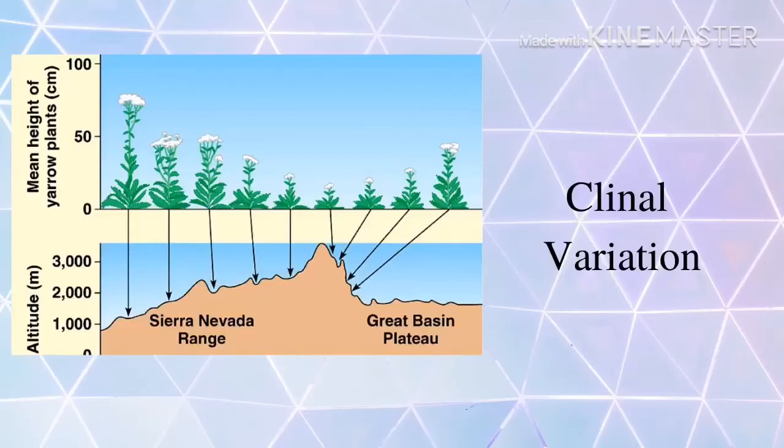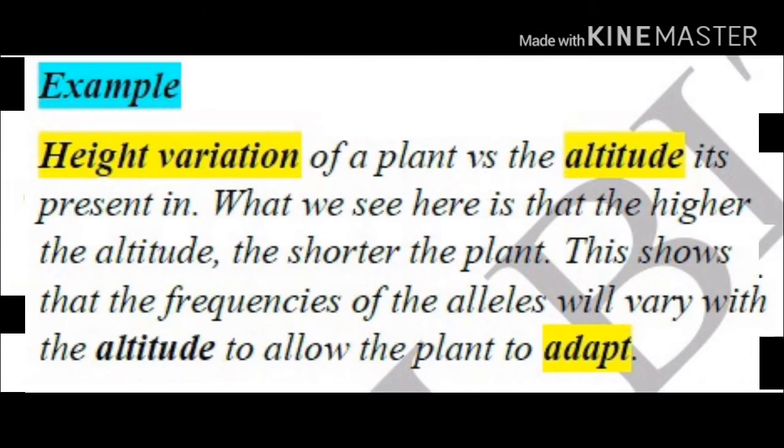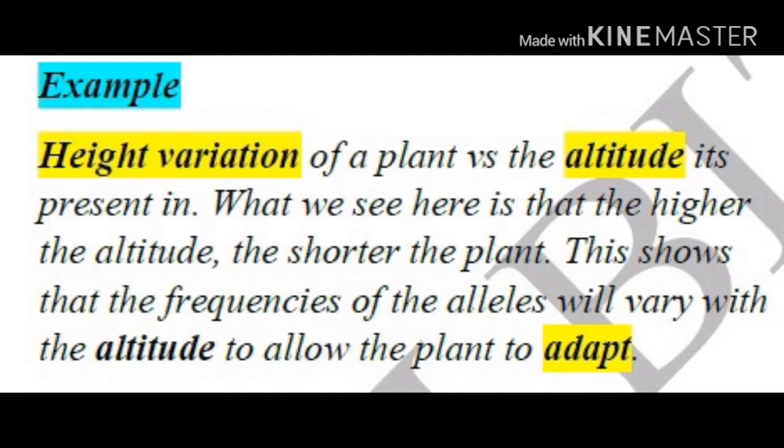During this lecture, we'll be discussing clinal variation. The traditional definition is the geographic or graded variation in a population, and we'll be explaining that using examples. First of all, the height variation of a plant, and we're going to be seeing this graph in the next slide.